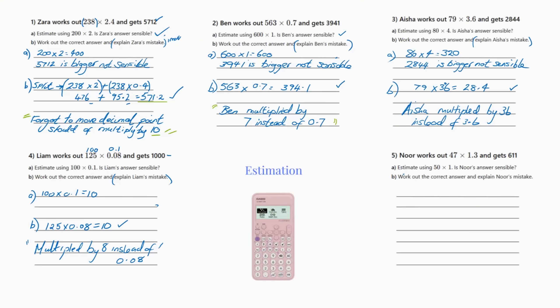And then the final one, estimate using 50 times 1. Is Noah's answer not sensible? So he's got Noah walks out 47 times 1.3 and gets 611. So let's work it out here. Well 50 times 1 is obviously 50, so 611, he's bigger and not sensible.